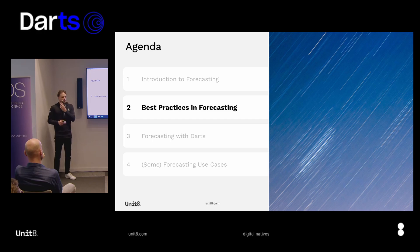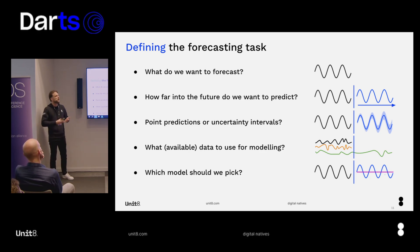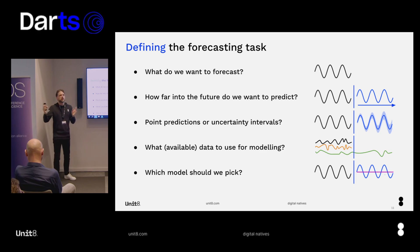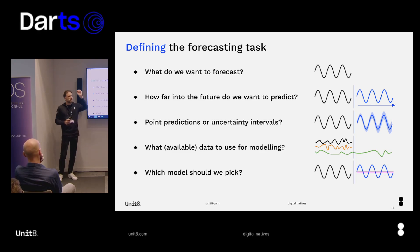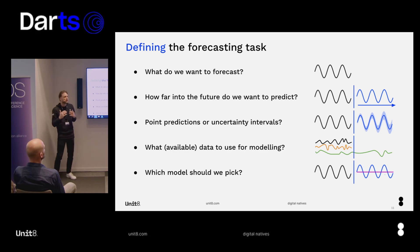Now let's look at best practices. First, you have to define your forecasting task. What variable do we actually want to forecast? How far into the future do we want to forecast — a one-week prediction, a one-year prediction — and also the time interval for those time steps? Do we want daily forecasts for one week, or monthly forecasts for one year? Also, do we want to make point predictions — single values for each time step — or do we want to make probabilistic predictions? Usually the latter is better: you might be more interested in knowing that with 90% probability the actual value will be within a certain interval.